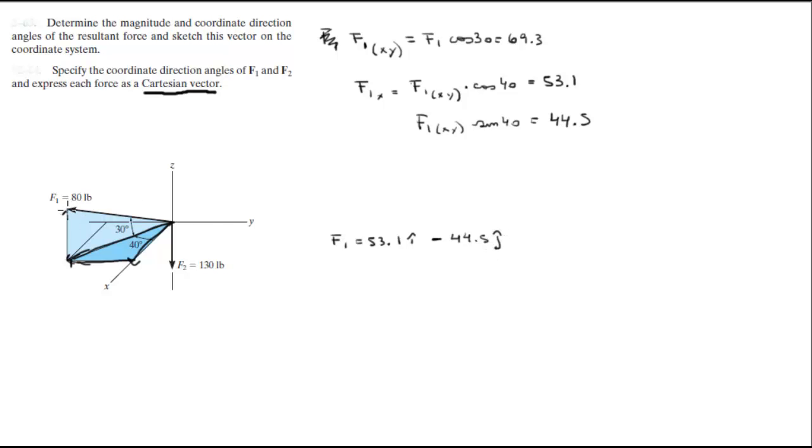Now to find the z component, which is this vector right here, we're going to do the sine of 30 of the whole force. So F of 1 of z, and this is F of 1 of y, F of 1 of z is equal to F of 1, not the projection, but the actual force, times the sine of 30 degrees. That would equal 40, so it's positive 40 in the k vector direction.